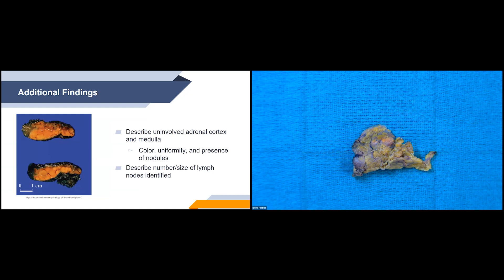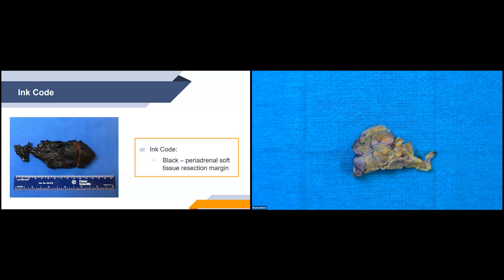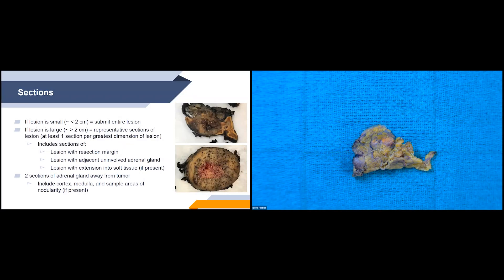Additional findings will describe the uninvolved adrenal cortex and medulla — color, uniformity, and presence of nodules. We'll also describe any lymph nodes found, giving their number and size. The ink code is black for the periadrenal soft tissue resection margin.